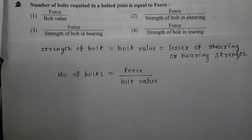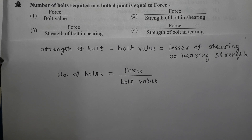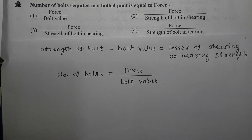Number of bolts required in a bolted joint is equal to force divided by — and four options are given. The strength of the bolt is also called bolt value, and bolt value is the lesser of shearing strength or bearing strength of the bolt. A bolt may fail due to shearing or due to bearing; the lesser of these two strengths is the bolt value. The number of bolts is obtained by the ratio of force to bolt value. So force divided by bolt value equals number of bolts. The correct option is option number 1.